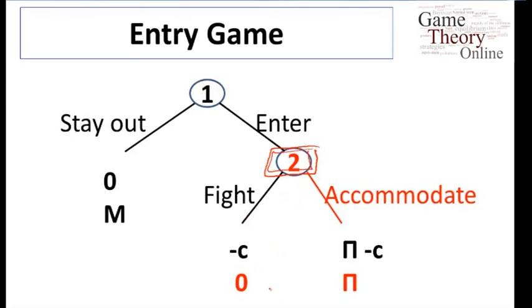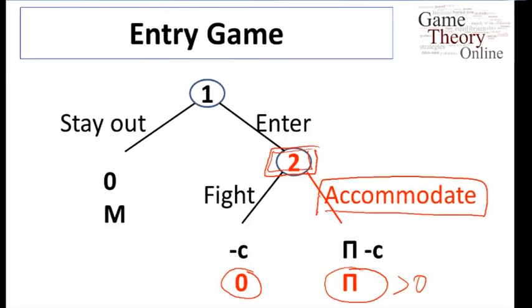In particular, what do we end up with? We end up with zero if they fight, profit pi which is greater than zero if they accommodate. So the only prediction that we can make in terms of a player maximizing payoffs is to accommodate.